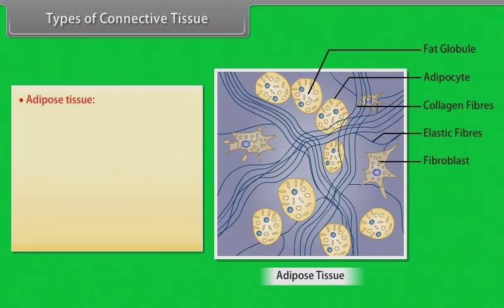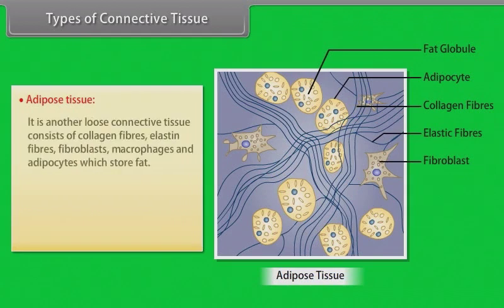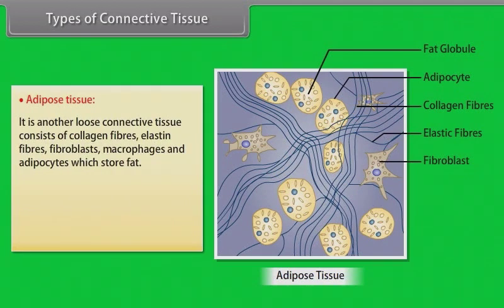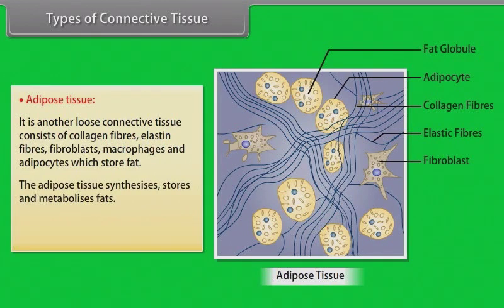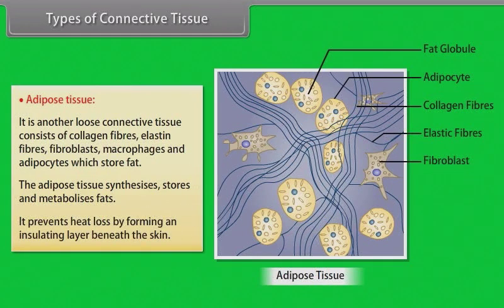Adipose tissue is another loose connective tissue. It consists of collagen fibers, elastin fibers, fibroblasts, macrophages, and adipocytes which store fat. The adipose tissue synthesizes, stores, and metabolizes fats. It prevents heat loss by forming an insulating layer beneath the skin.